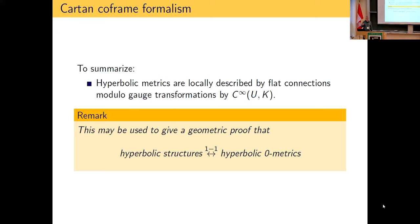To summarize: hyperbolic metrics can be described by flat connections, at least locally. The flat connection is uniquely defined up to these coframe rotations — some gauge transformations. And one can use this fact to give a pretty simple geometric proof that hyperbolic structures are in one-to-one correspondence with hyperbolic zero metrics.